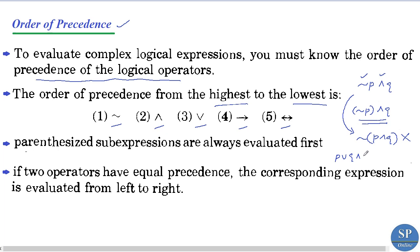For another example, consider p or q and r — that is p disjunction q conjunction r. Here we have two operations: disjunction and conjunction. Since conjunction has higher precedence, we first perform q conjunction r, and then perform p disjunction (q conjunction r).